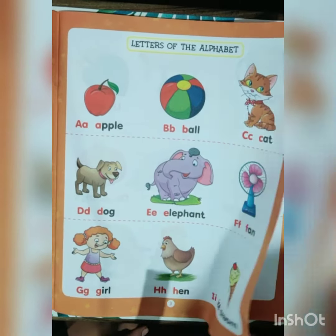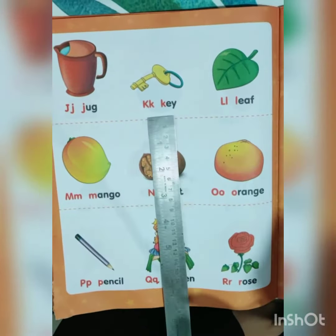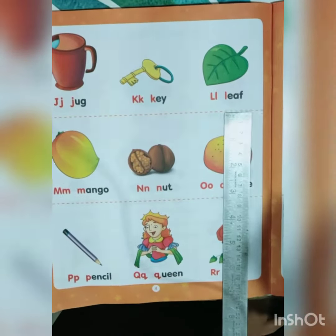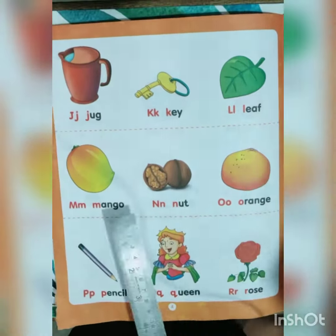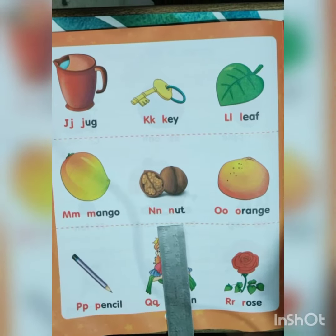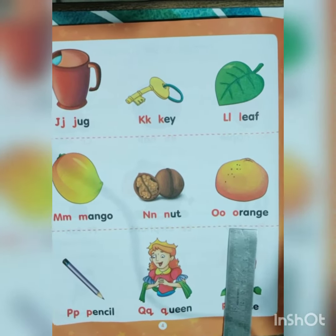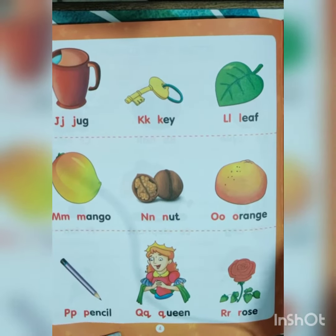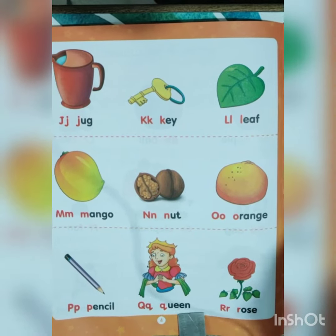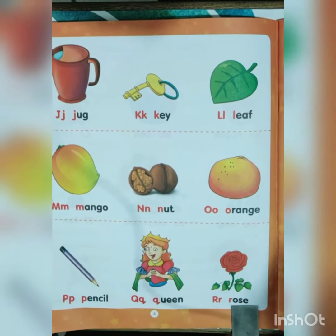I for Ice Cream, J for Jug, K for Key, L for Live, M for Mango, N for Nut, O for Orange, P for Pencil, Q for Queen, R for Rose.